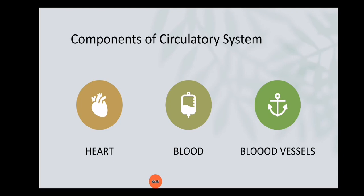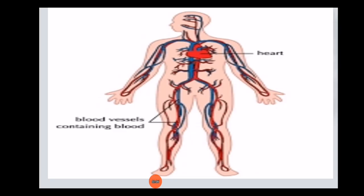Here are the main components of the circulatory system: the heart, which is the pumping organ; the blood, which carries nutrients and oxygen; and the blood vessels, which provide a pathway for blood to flow throughout our body. Blood vessels are basically of two types: number one is the artery, and number two is the vein.